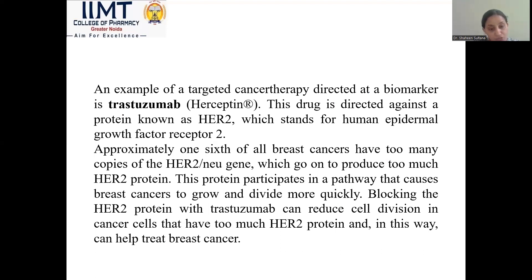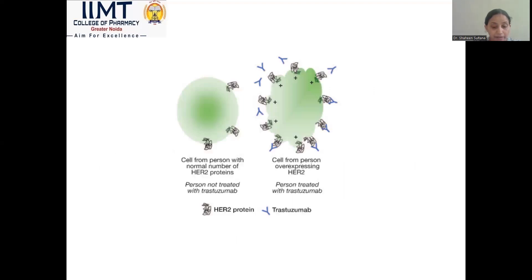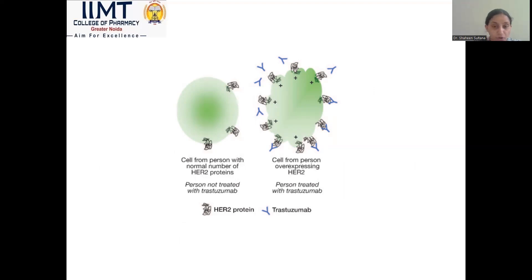In this way, trastuzumab can help treat breast cancer. In the diagram, you can see that in a normal person, less HER2 protein is expressed. But with trastuzumab, the antibody binds with the protein. In cancer cells, too much HER2 protein is expressed, and that is the targeted area for trastuzumab.